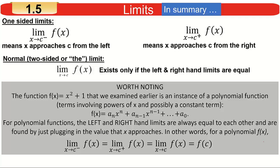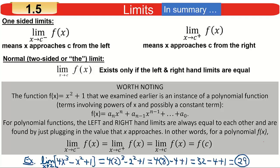For example, if I gave you the limit of 4x cubed minus x squared plus 1 as x approaches 2, instead of making charts looking from the left and right of 2, this result says: if it's a polynomial function, just plug 2 into the polynomial and that answer is the answer. That saves you from having to do all that work from left and right.